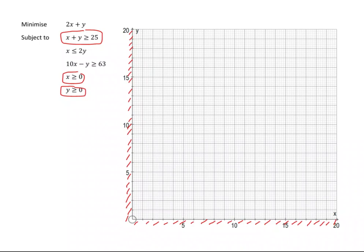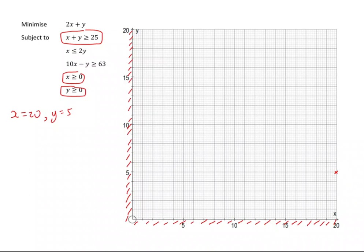We need to find two coordinates and then join them together. If I think about the end of the graph where x is equal to 20, the y value would have to be 5. So (20, 5) is a point on this line. Likewise, when y is 20, x would be 5. So (5, 20) is another point on this line, up here. So I need the line that goes through those two.